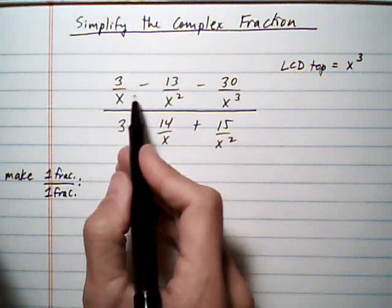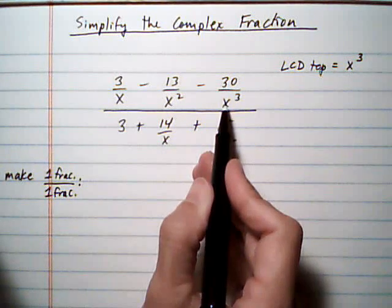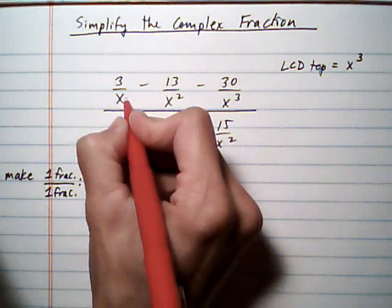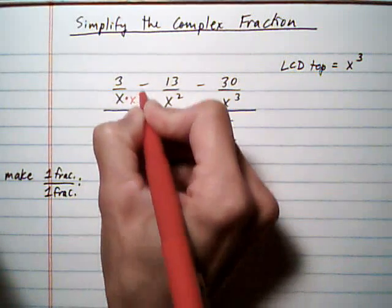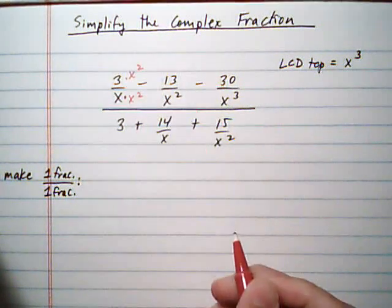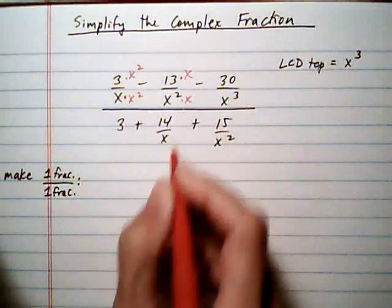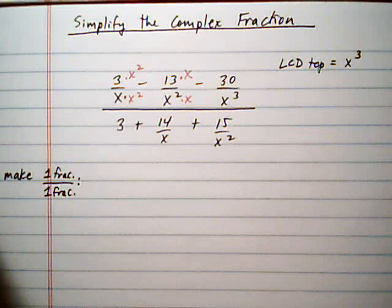So we're going to force every single fraction on the top to have an x cubed as the denominator. So that means this first one gets multiplied by x squared, top and bottom. This one gets multiplied by just an x, top and bottom. And the last one doesn't need anything. It's already x cubed.